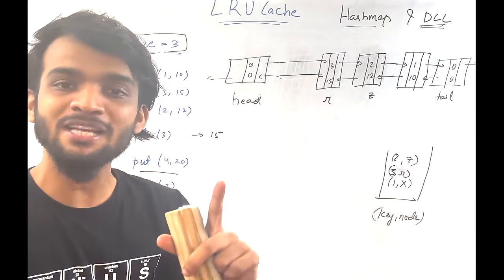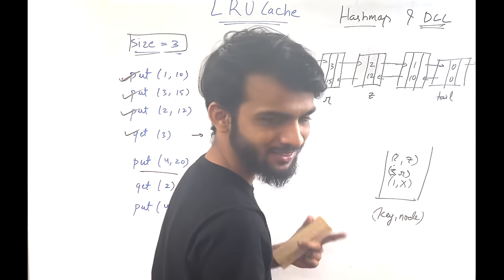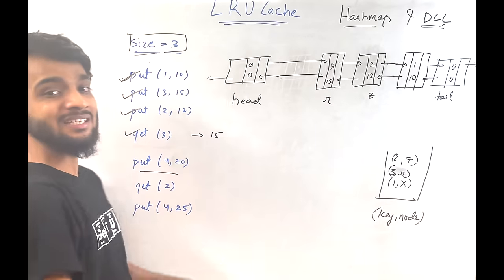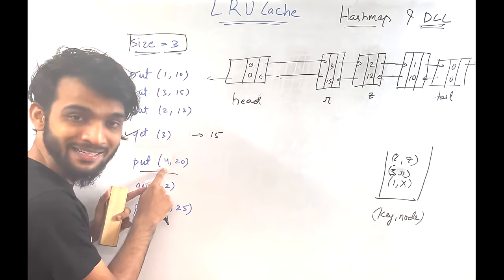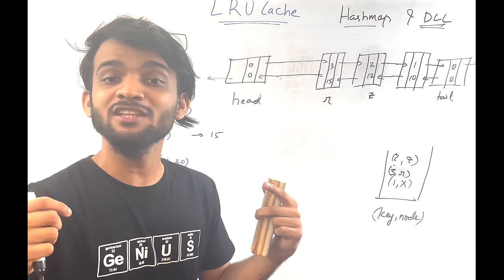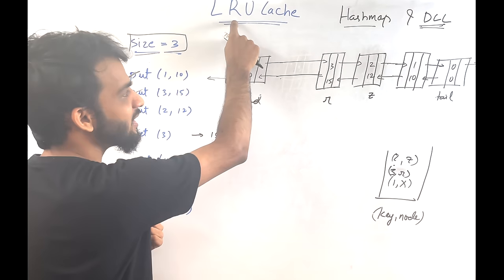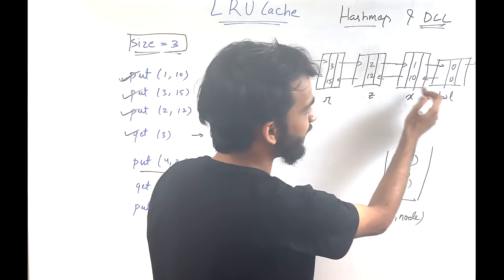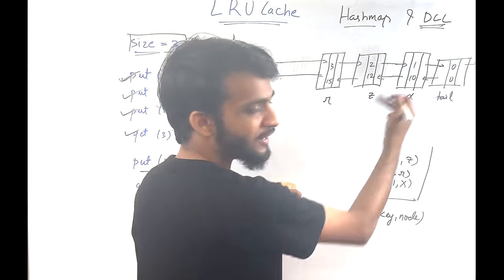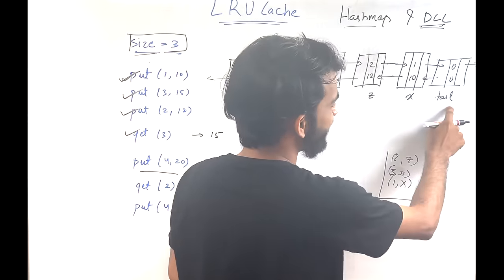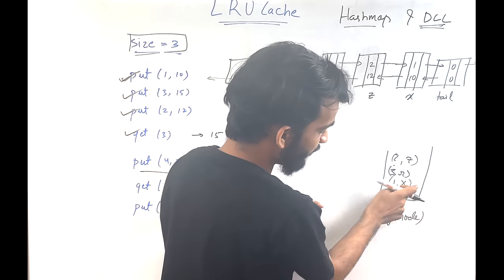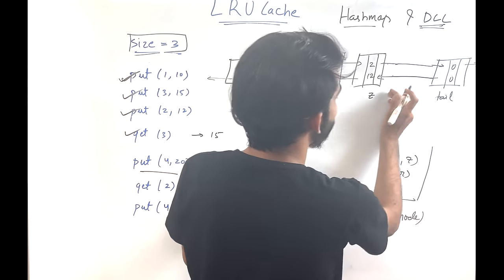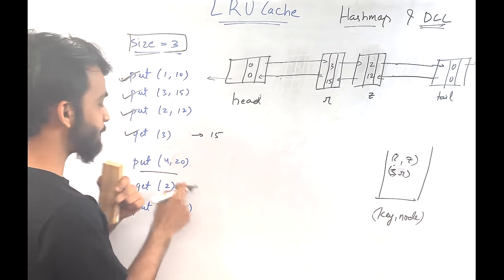For put(4,20): check if 4 exists in the hash map — no. Current cache size is 3, capacity is 3, so it's full. We must remove the least recently used, which is right before tail — that's (1, value), with address X. First, remove key 1 from the hash map, then delete that node from the doubly linked list.